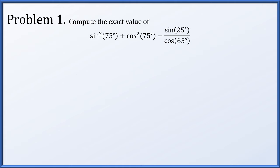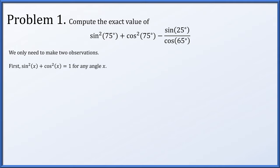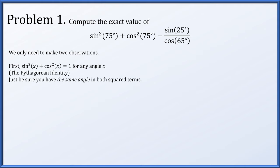In problem one, we'll compute the exact value of sine squared of 75 degrees plus cos squared of 75 degrees minus sine of 25 degrees divided by cosine of 65 degrees. We really only need to make two observations to complete this problem. First, sine squared x plus cos squared x equals 1 for any angle x. This is called the Pythagorean identity. Just be sure you have the same angle in both terms — sine squared of one angle plus cos squared of the same angle always equals 1. So sine squared of 75 degrees plus cos squared of 75 degrees is equal to 1.